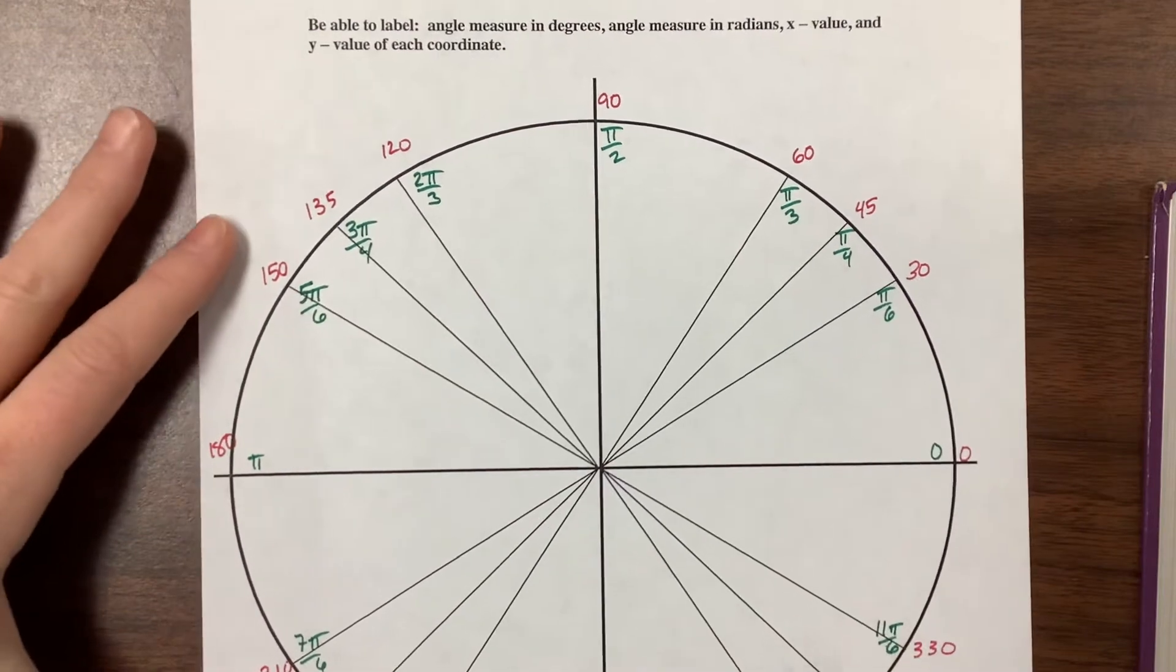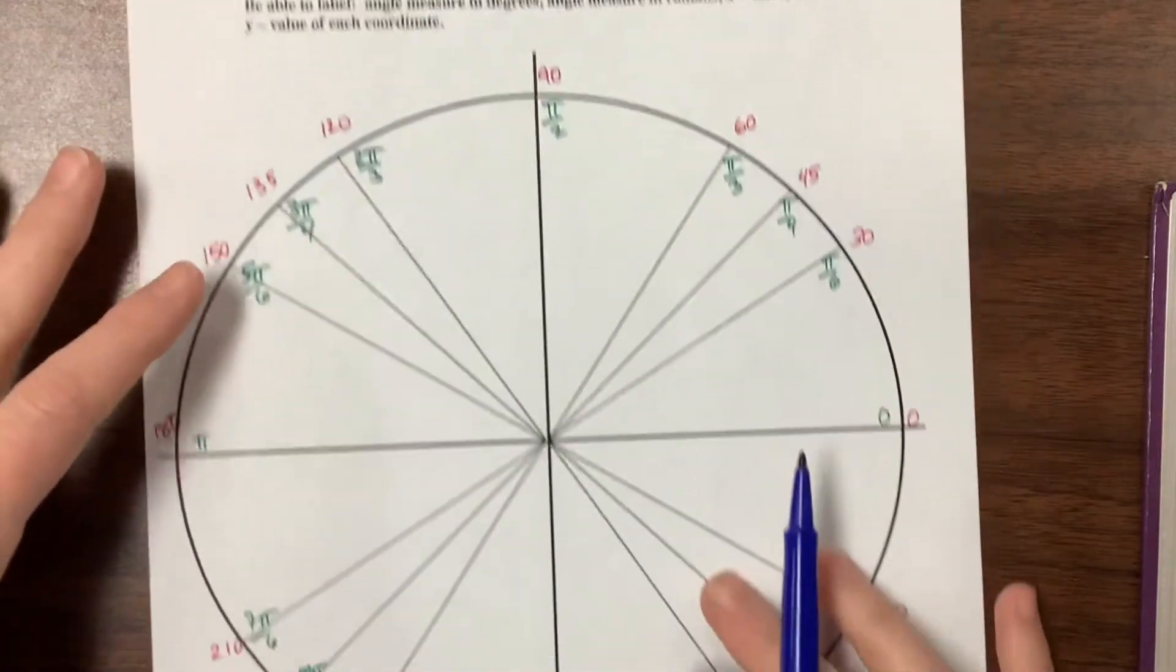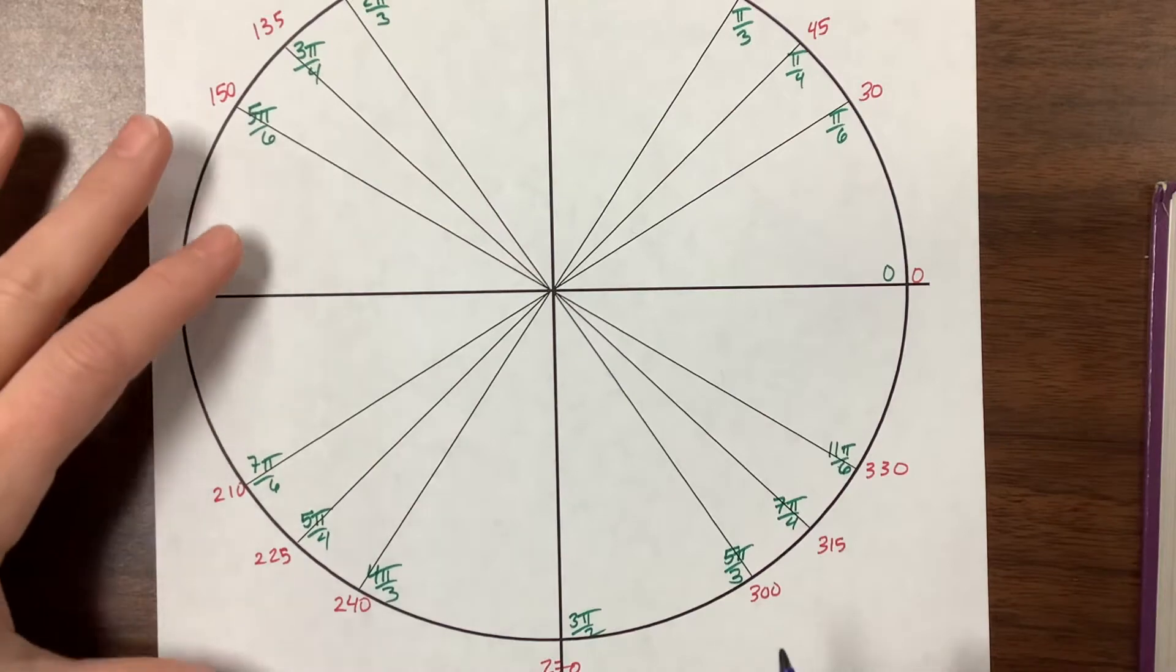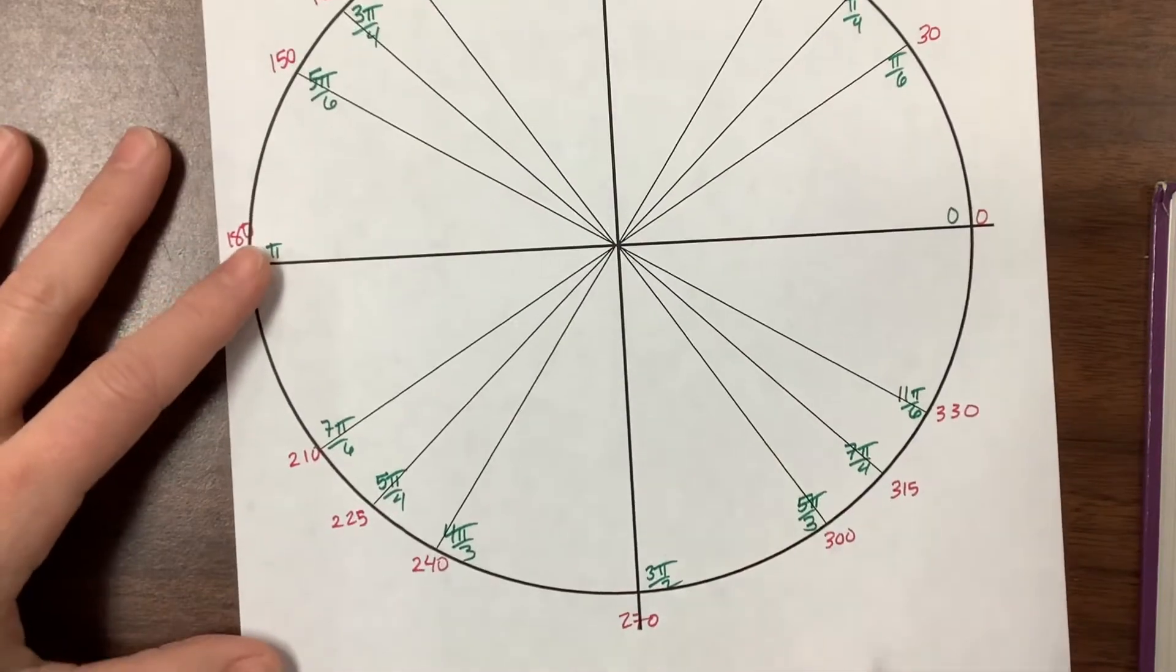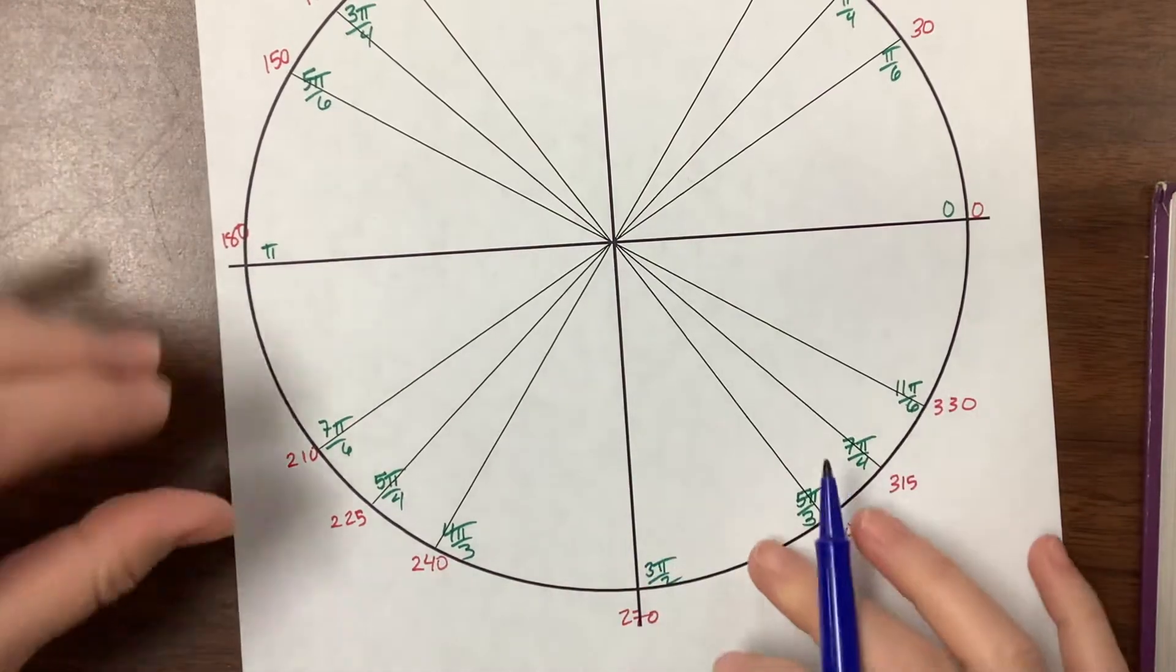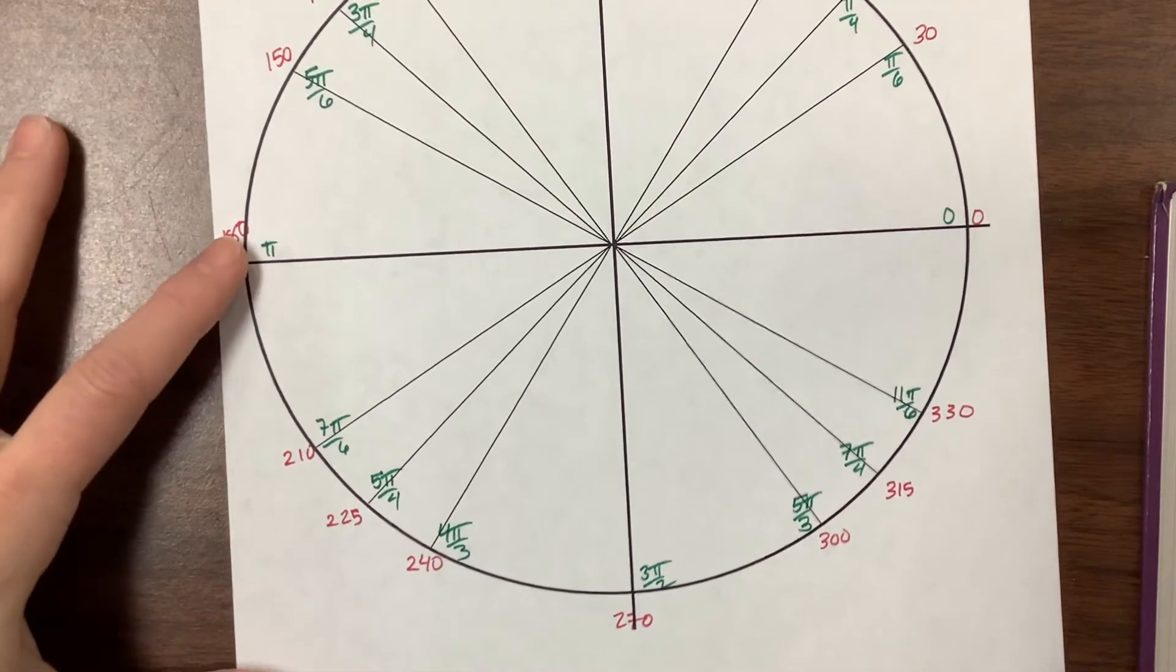I'm going to give you this exact piece of paper when you come to do the unit circle race. I have a previous video that helps you figure out the radians, so go back and look for that if you don't know where all of this came from.